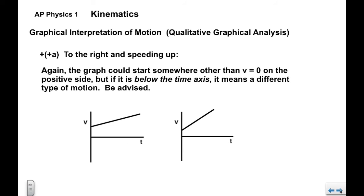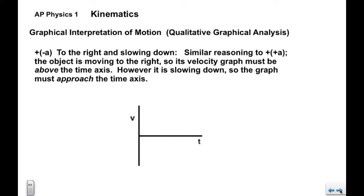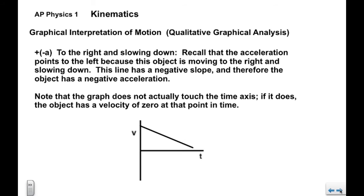For plus-minus A — to the right and slowing down — the object is moving to the right so the velocity graph must be above the time axis, but it's slowing down so the graph should approach the stop line from above. Recall that the acceleration points to the left because the object is moving to the right and slowing down. This line has a negative slope and therefore the object has a negative acceleration. The graph does not actually touch the time axis; if it did, the object would stop.